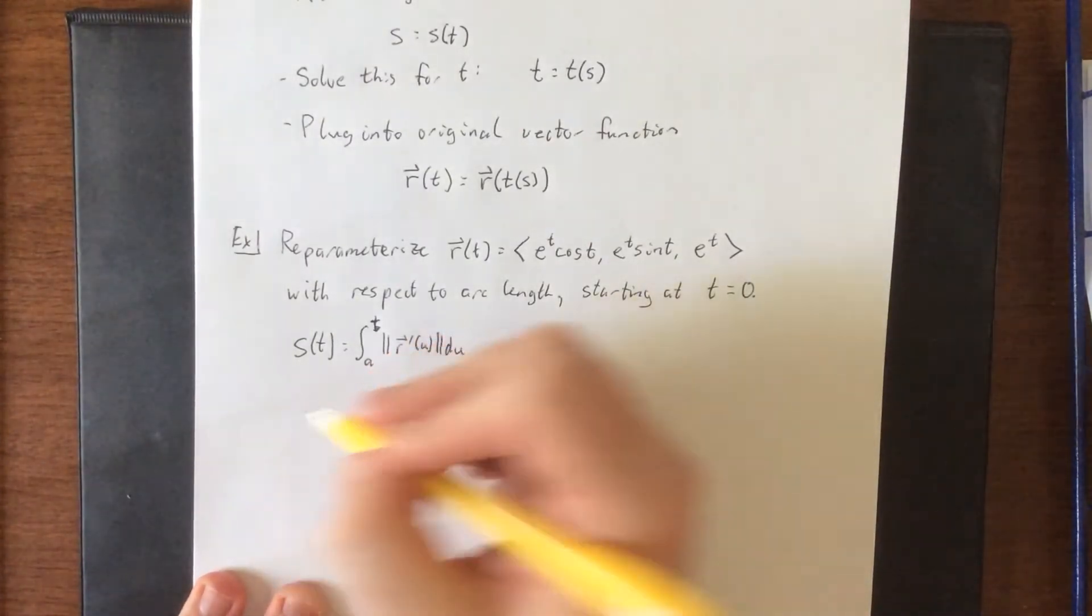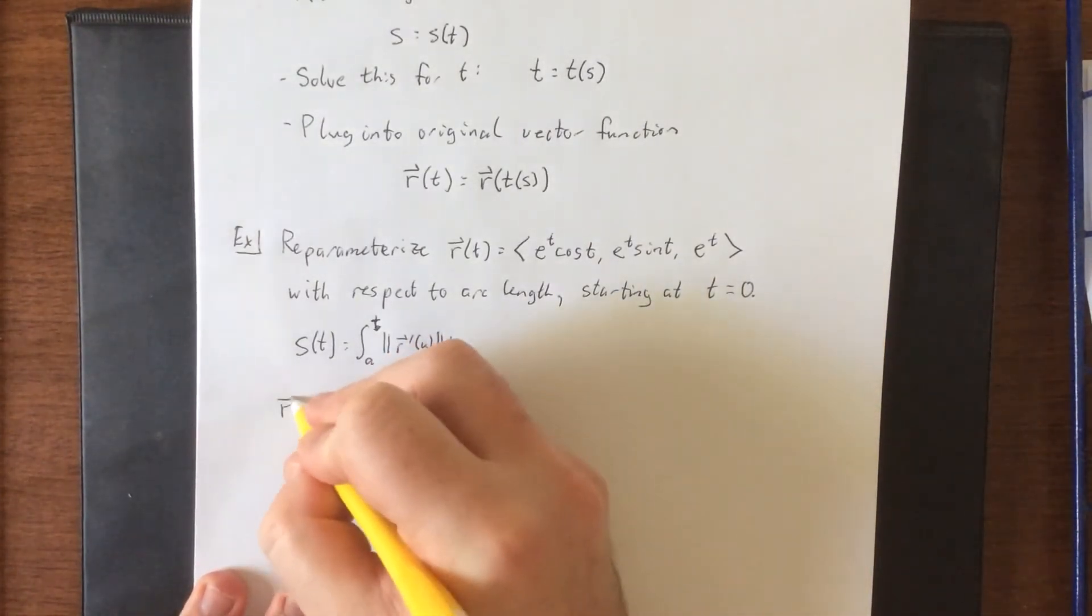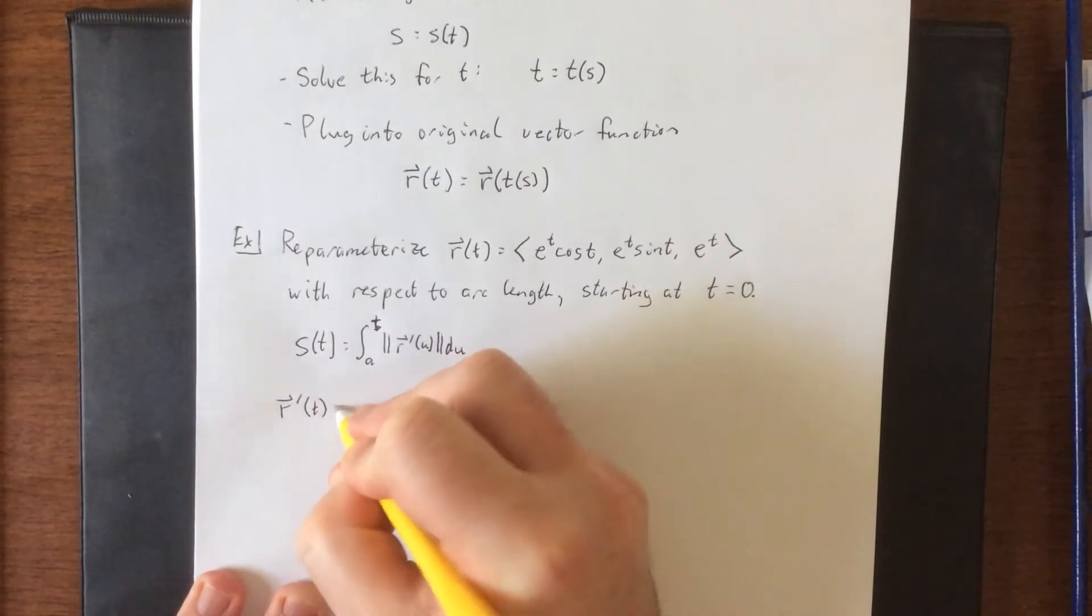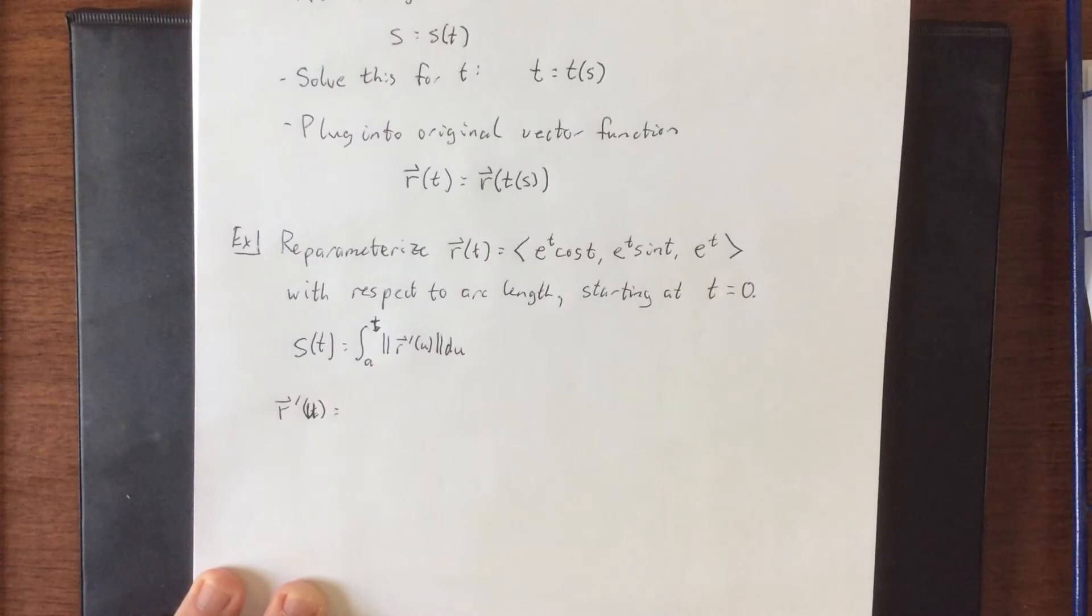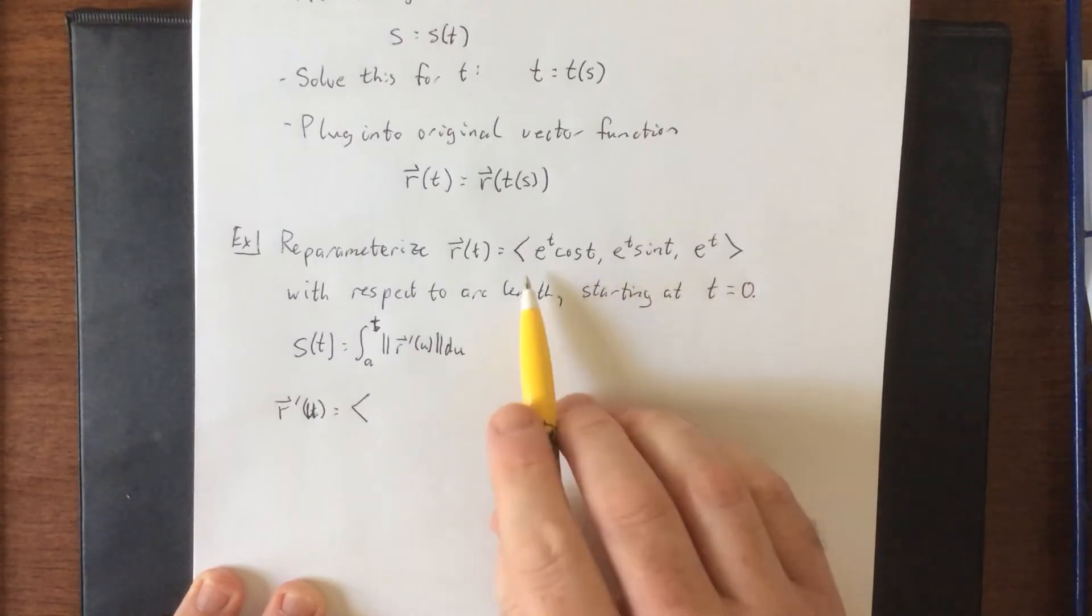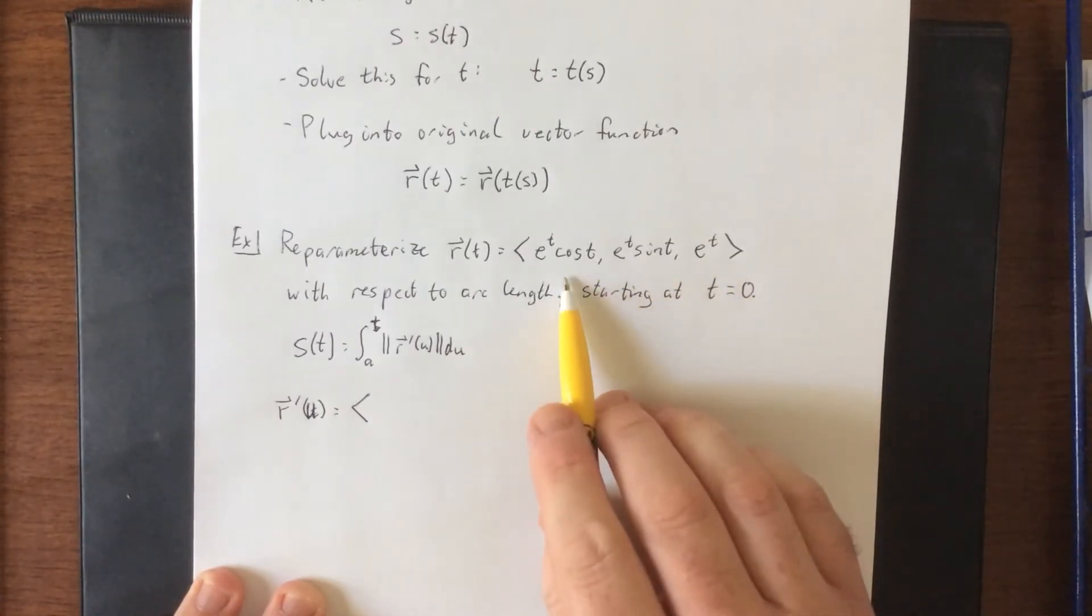In the meantime, though, we have some stuff to do. So first, let's find r prime of t. No, excuse me, r prime of u. Man, it's like when you first switch from f of x to f of y, your entire world gets flipped upside down. So what we'll do is we'll differentiate all three of these component functions.